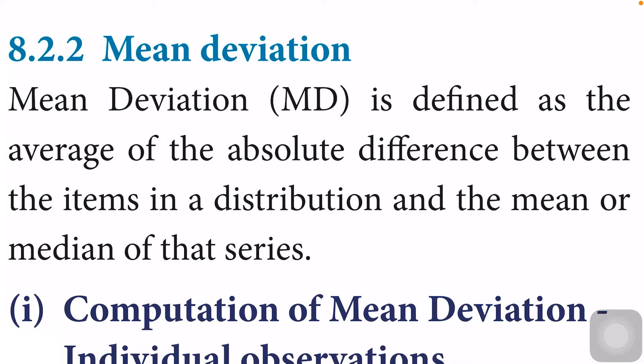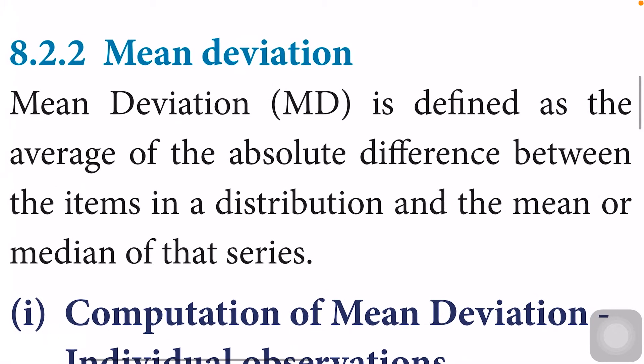Mean deviation is the difference between the items of the distribution with the mean or median. If we calculate the deviation with respect to mean, we call it mean deviation about mean. If we calculate the value regarding the median, then we call the deviation mean deviation about median.